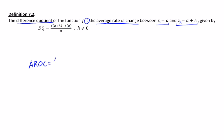So here's my AROC calculation. It's delta y over delta x, which also can be thought of as f(b) minus f(a) divided by b minus a.